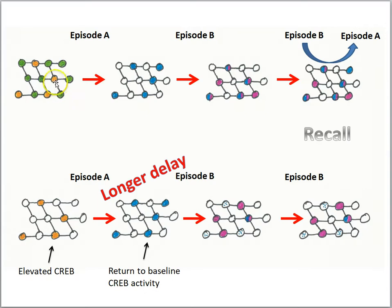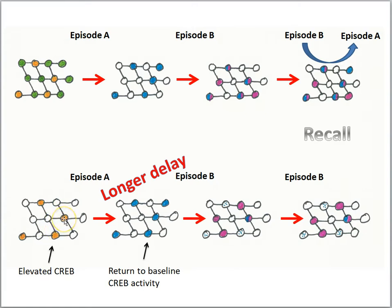What we just discussed was the scenario where episode A and B follow closely in time — we get the overlapping population of cells that links the memories. What if there's a longer delay between episode A and B? If there's a long delay, the elevated CREB activity will diminish over time, returning to baseline after a while. If episode B occurs after the return to baseline of CREB activity, then you're going to get a different population of cells responding to episode B, so you won't have as many overlapping cells.